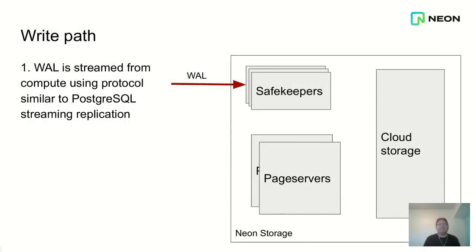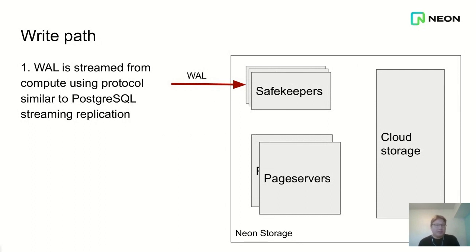Firstly, there's the write path. Whenever Postgres makes a modification to a page — an insert, update, or delete — it writes a record to the write-ahead log. Normally that would get shipped or streamed to a replica, but in Neon it gets streamed to what we call the safekeeper nodes. We have three safekeeper nodes running at all times for each database, and there's a quorum consensus algorithm. When you commit a transaction, it gets sent to all three safekeeper nodes.